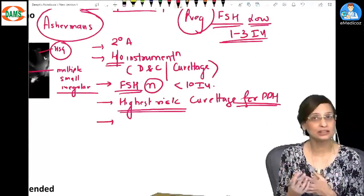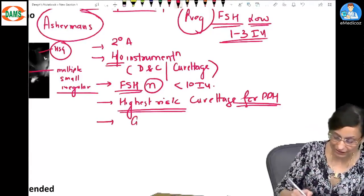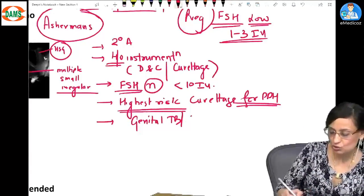Fourth MCQ that they could ask is which infections can cause Asherman's? So remember genital TB and schistosomiasis.